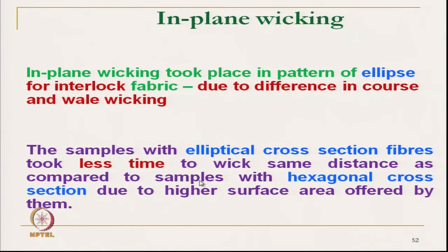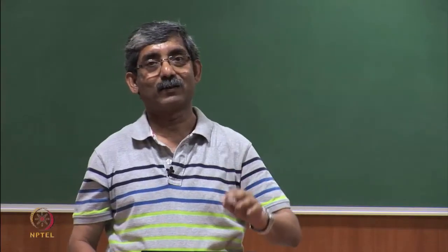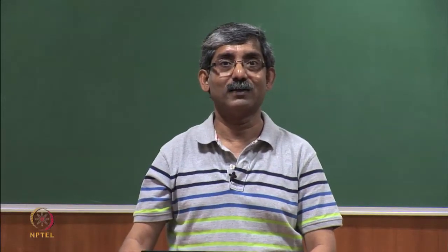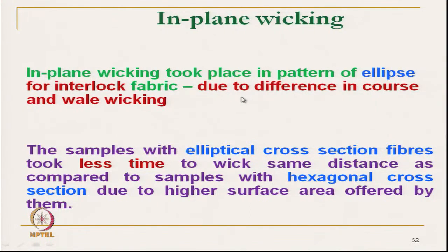Regarding in-plane wicking: in-plane wicking took place in a pattern of an ellipse for interlock structure. That means, as we saw in vertical wicking where wale-wise and course-wise rates differed, the same phenomenon is predominant here — giving an elliptical rather than circular water front shape. The sample with elliptical cross-section fibre took less time because of the higher shape factor to travel the same distance as compared to hexagonal cross-section, due to higher surface area.